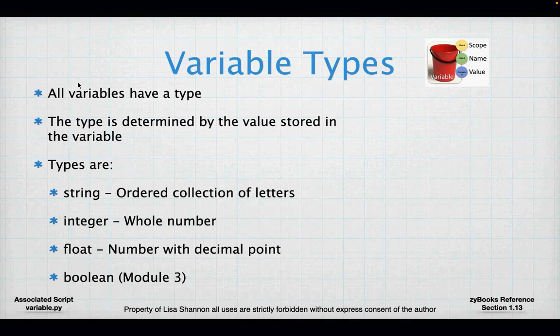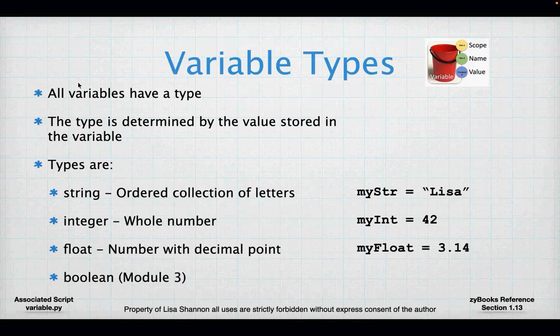We have four variable types: strings, integers, floats, and booleans. Booleans we won't deal with until module 3. For now we need strings, integers, and floats. A string is anything surrounded by quotes — it could even be the number 42, but if it's in quotes it's still a string. An integer is a whole number — a number without a decimal place. A float is a number with a decimal place. It's important to understand that there are only certain things you can do with each type, and different types don't always play well together.